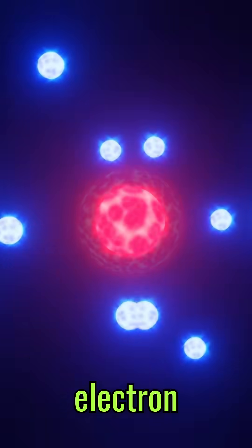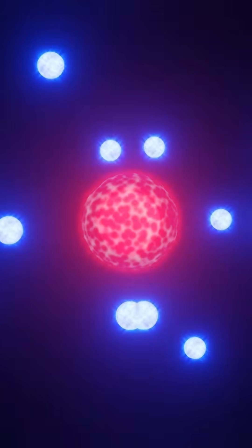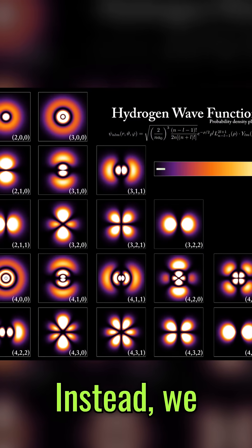Surrounding this tiny nucleus is the electron cloud, where negatively charged electrons move at unimaginable speeds. Electrons are arranged in energy levels or shells, but their exact locations are not fixed.